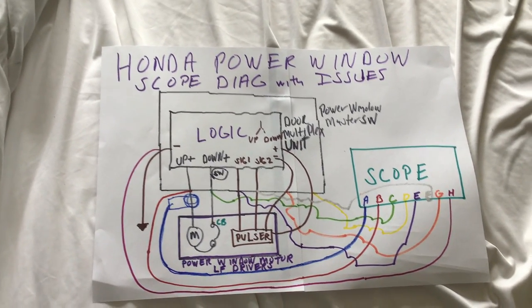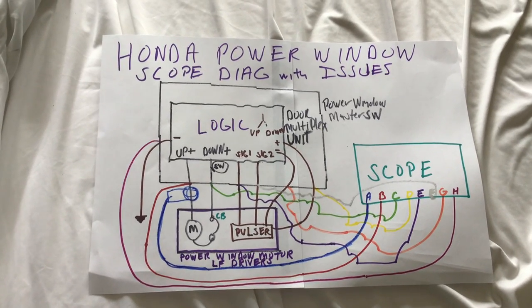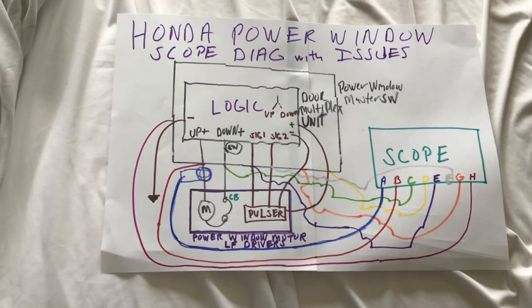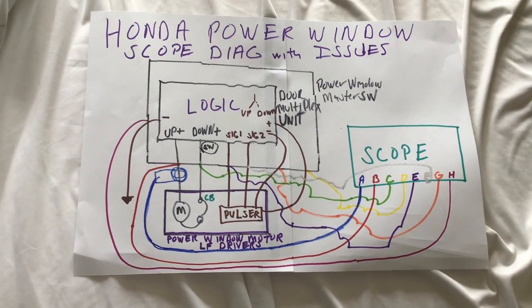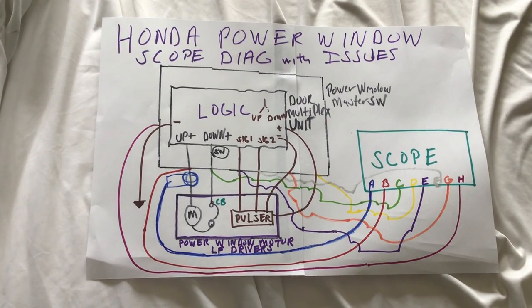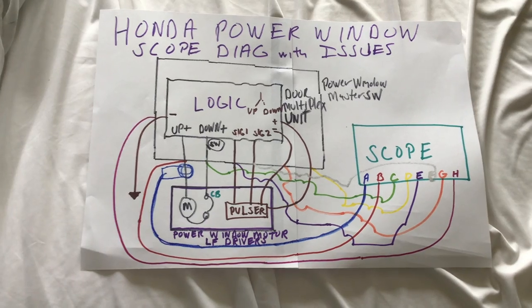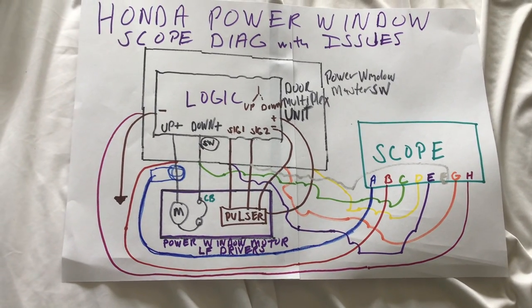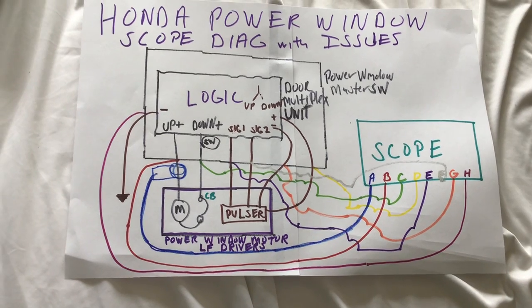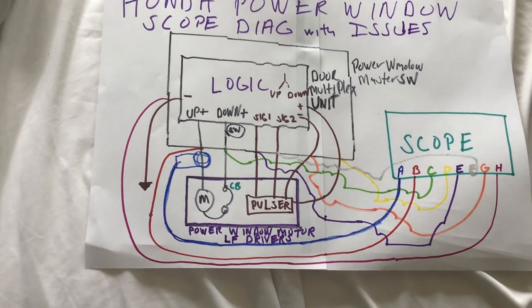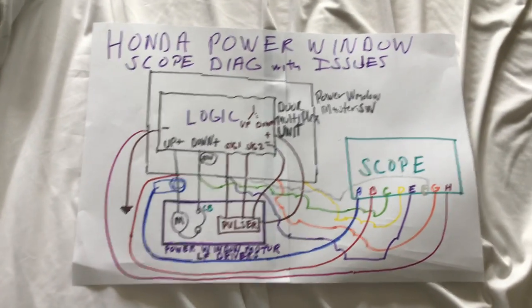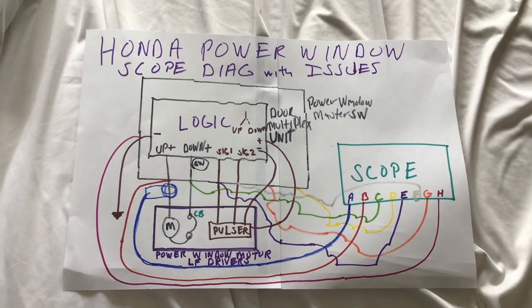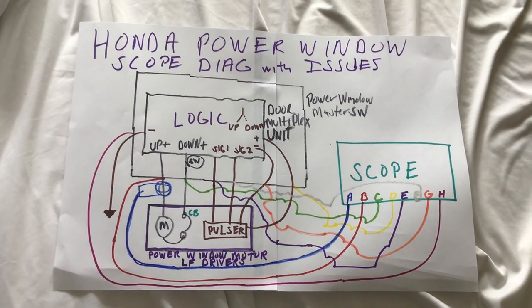Channel B red is the up-positive wire coming off the door multiplex unit. When the window is commanded up, that voltage will be high and the voltage on the other end of the motor will be low — that's an up command, requiring power and ground for current to flow through the motor. Channel C green is the down command — that voltage will be high when the window is commanded down, and the red voltage will be low. They flip-flop depending on the direction: one's power, one's ground, trading situations based on which way the window is commanded to move.